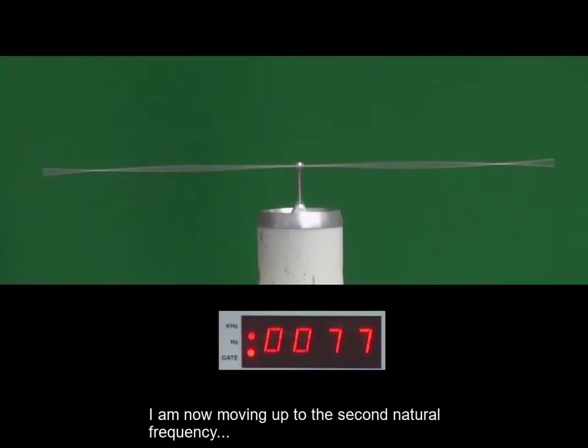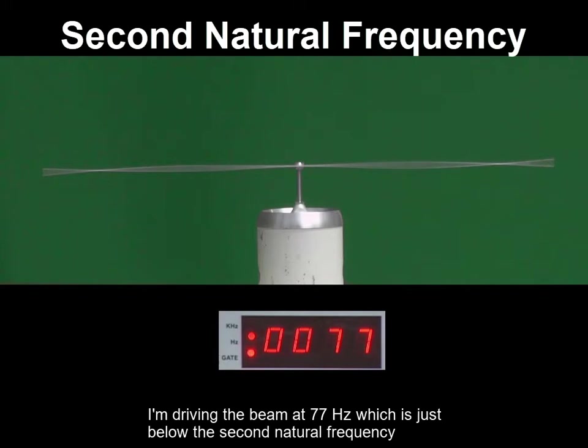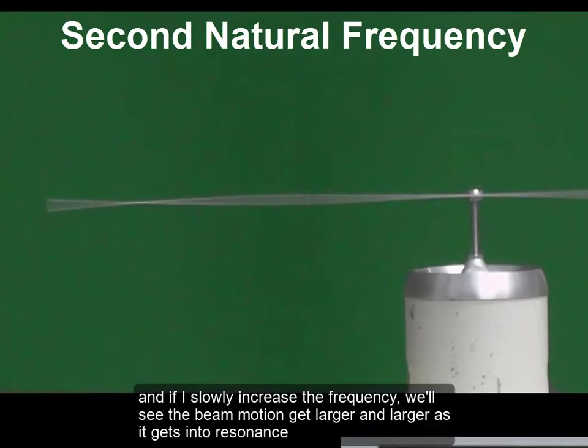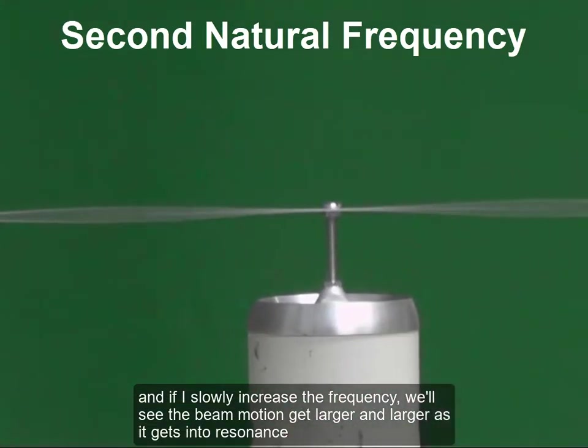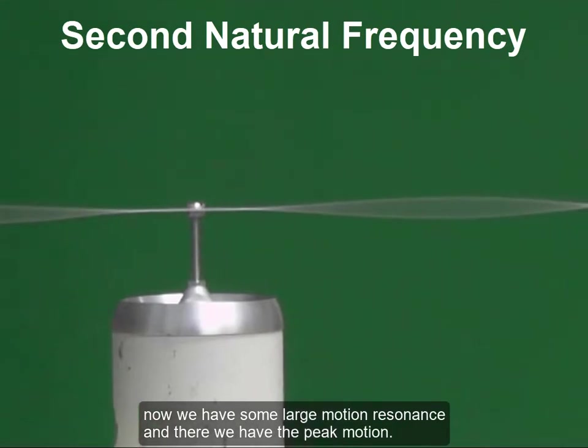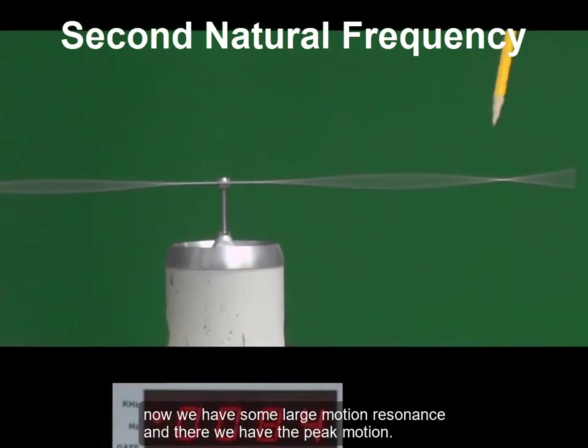I'm now moving up to the second natural frequency. I'm driving the beam at 77 Hz, which is just below the second natural frequency. And if I slowly increase the frequency, we'll see the beam motion get larger and larger as it gets into resonance. Now we have some large motion resonance and there we have the peak motion.